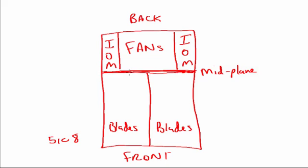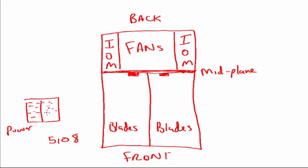The blades themselves are going to connect to a little connector on the back of the chassis. If we were to take a closer look at that connector, we'll see that it's split — one side is for power, and the other side, dotted, is for data. So everything is equidistant across the mid-plane for both power and data.